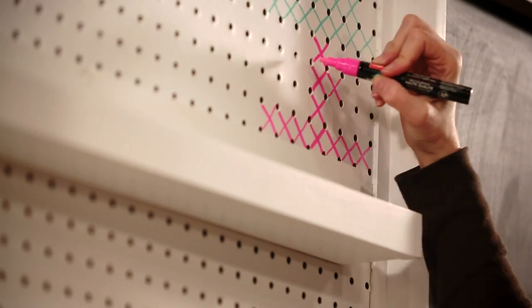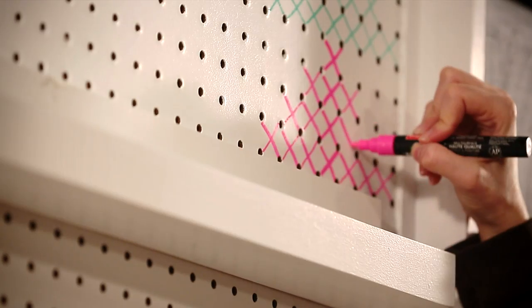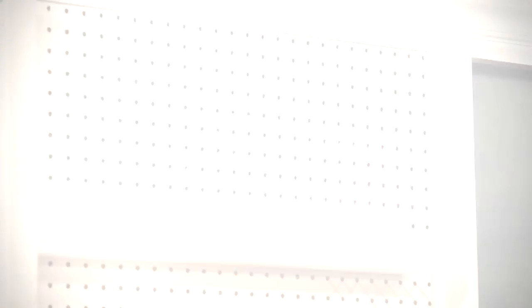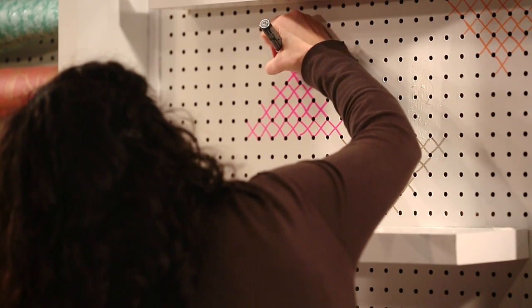We start at the bottom of each triangle with seven X's, then add five to the second row, three to the third row, and one on top. I found it easiest to start with the edges of the pattern and then fill in the center.